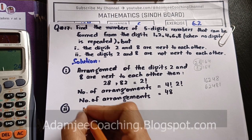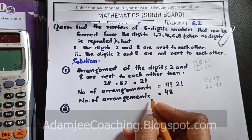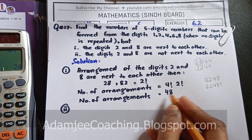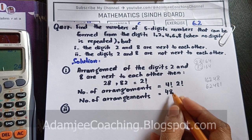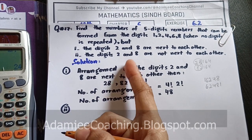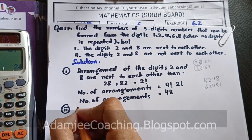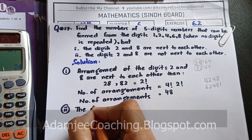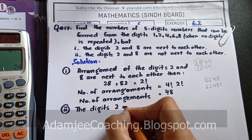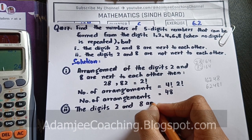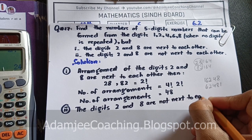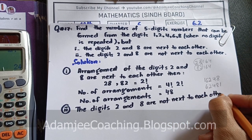So now we will see how the total arrangements will be. We will minus the number of arrangements where 2 and 8 are next to each other, which was 48, to find the arrangements where 2 and 8 are not next to each other. Part 2: digits 2 and 8 are not next to each other.